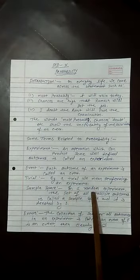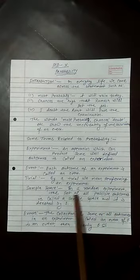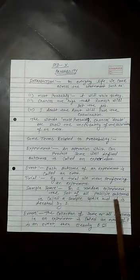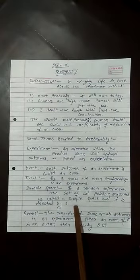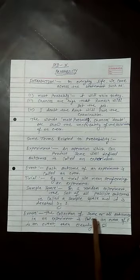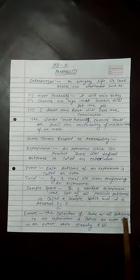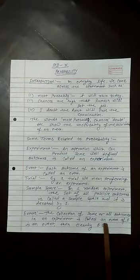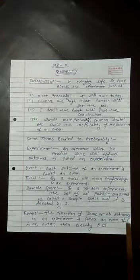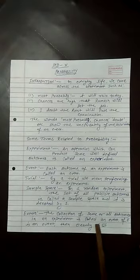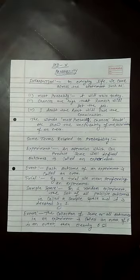In a random experiment, the set of all possible outcomes is called a sample space and it is denoted by S. Events - the collection of some or all outcomes in an experiment is called an event. If E is the event, then clearly E is a subset of S.